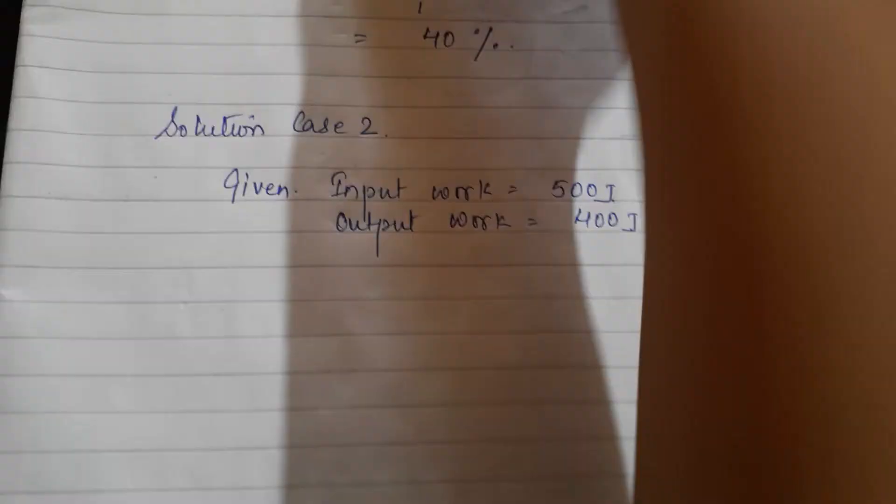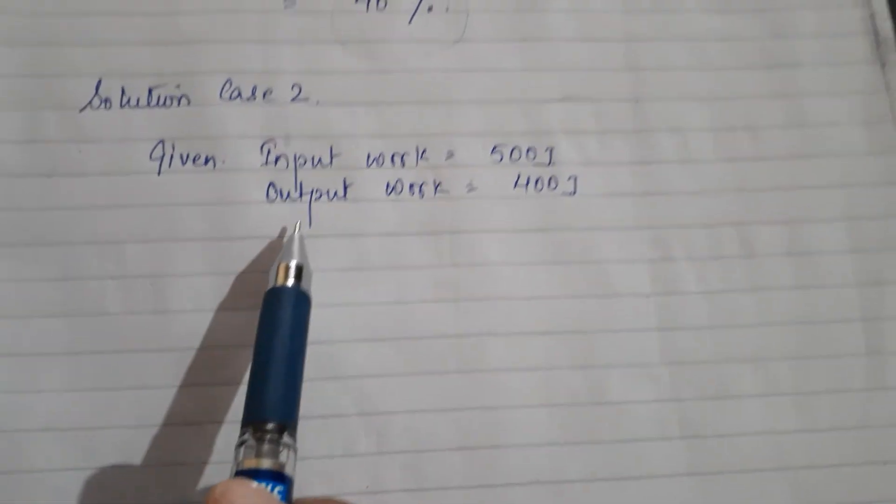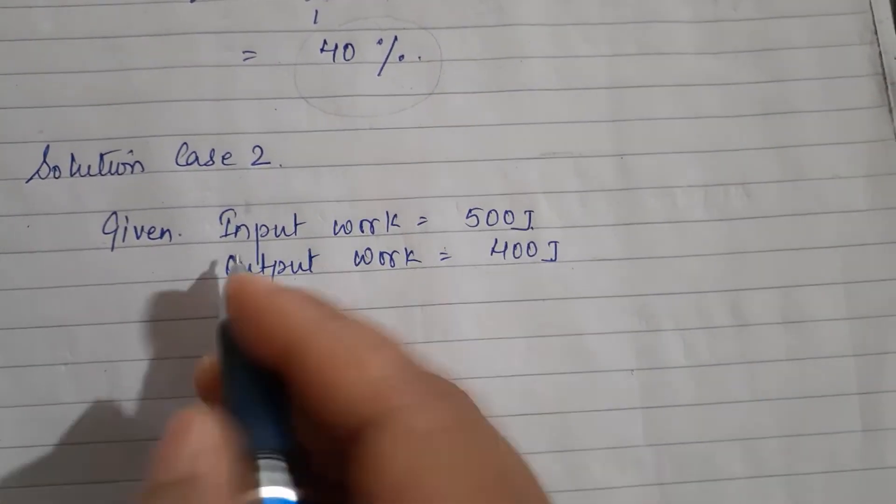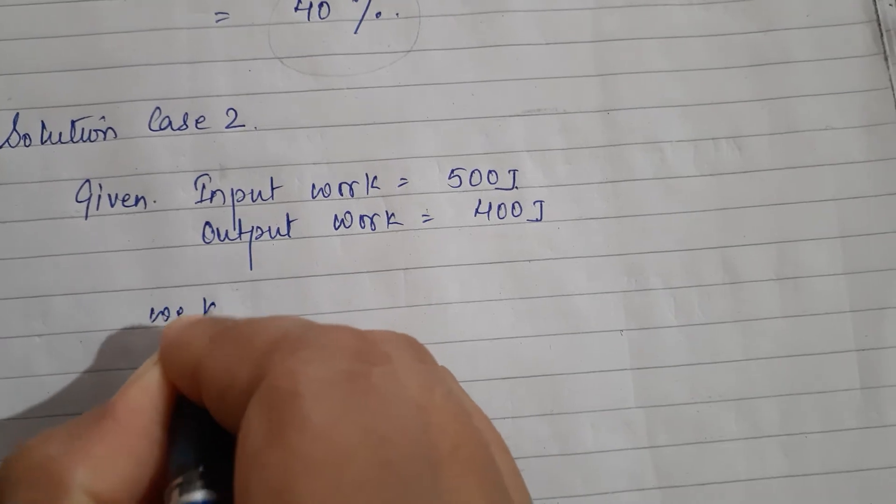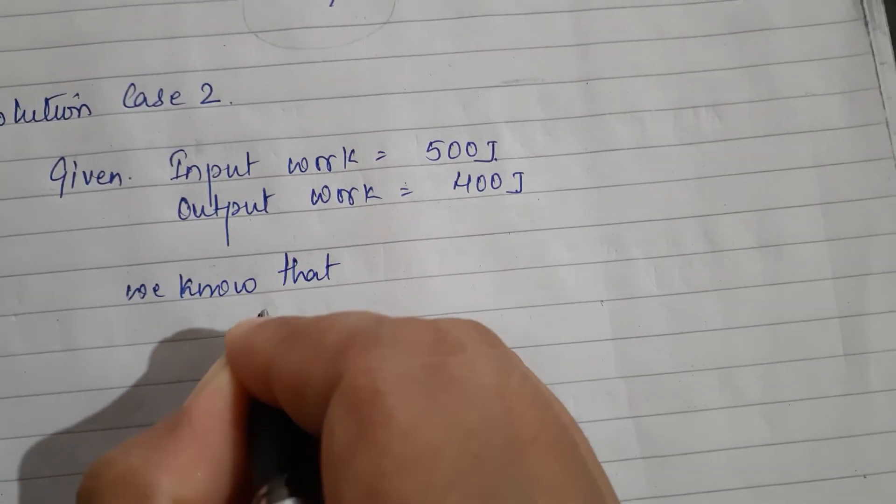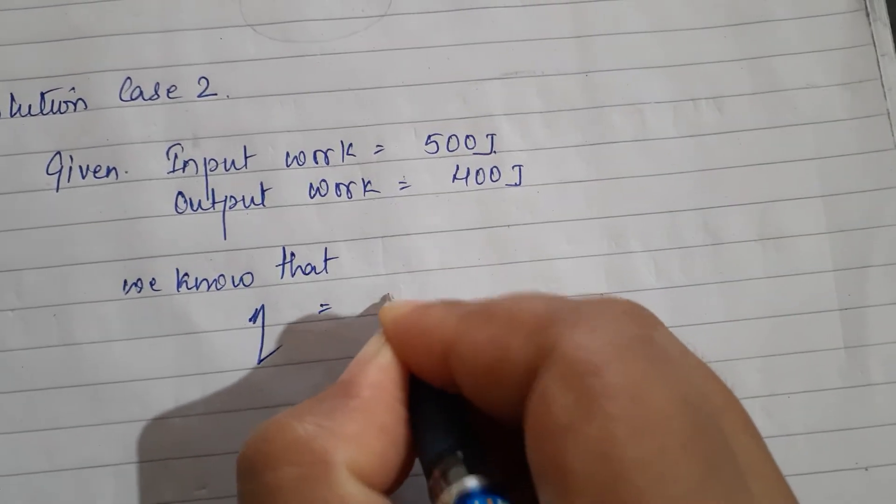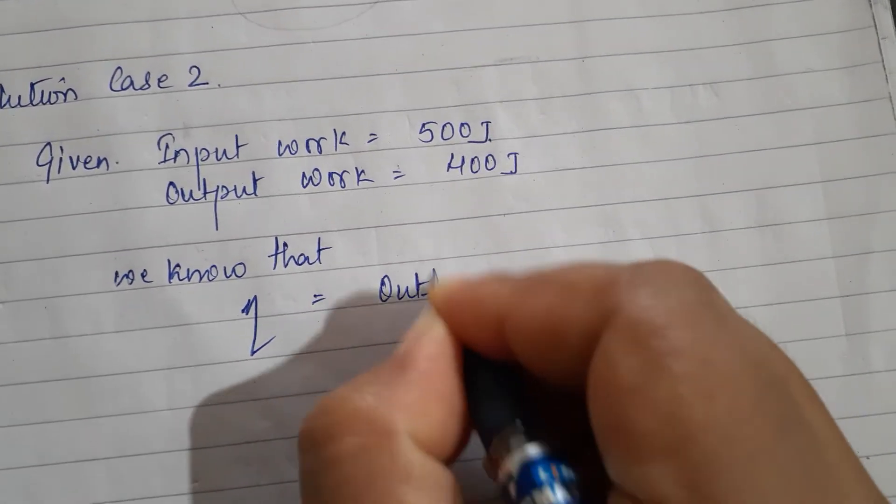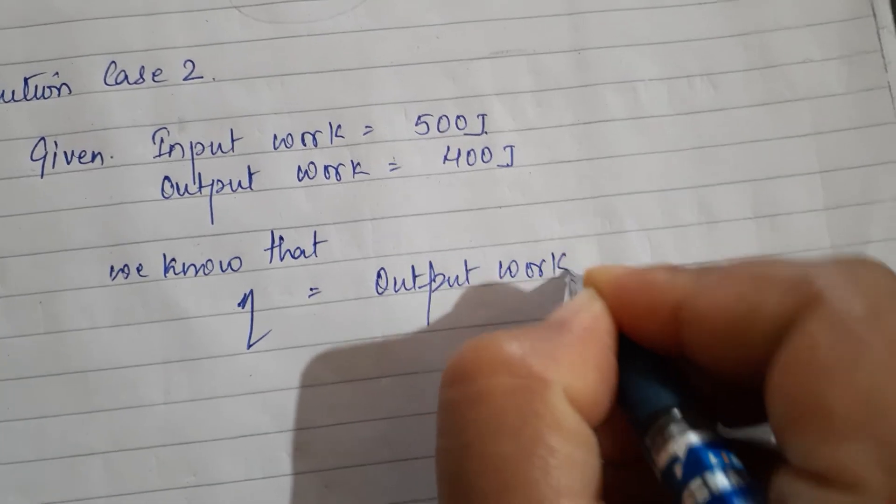So we'll put the formula of efficiency. What do we see? Given input work is 500, output work is 400. We know that efficiency is output work divided by input work.